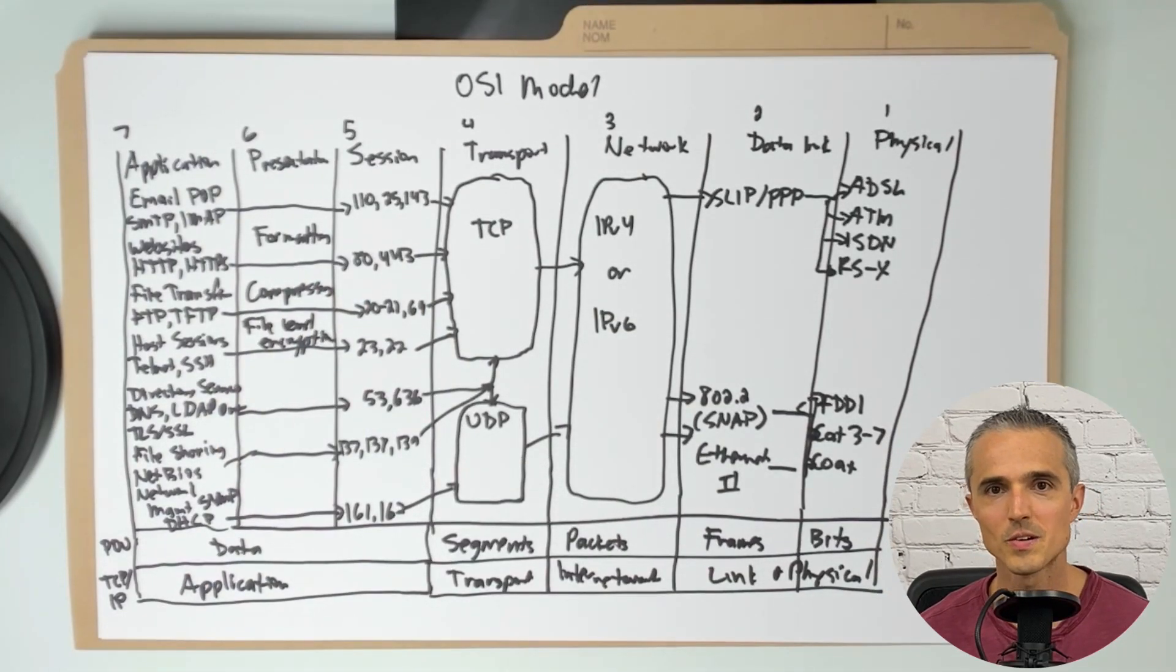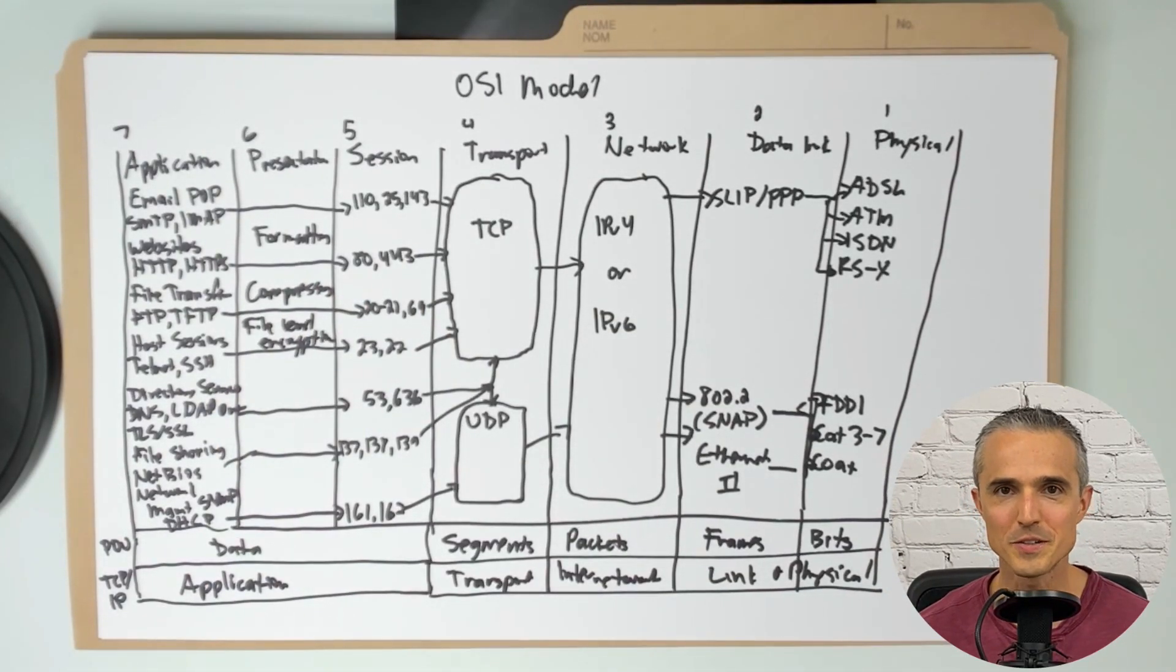So there it is. I hope you enjoyed the stone cold soundtrack from the early 2000s as much as I did. Let's go through it. Please do not throw sausage pizza away is across the top. Physical data link network transport session presentation layer.